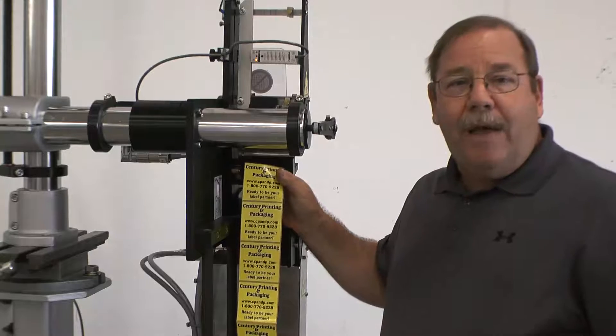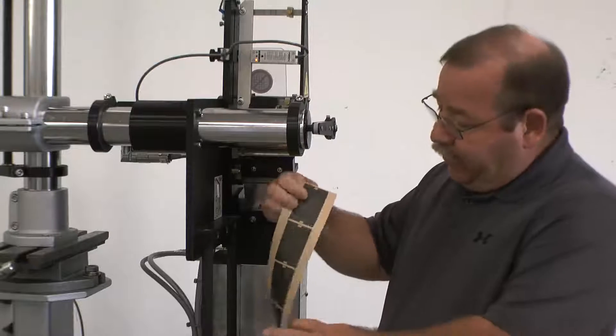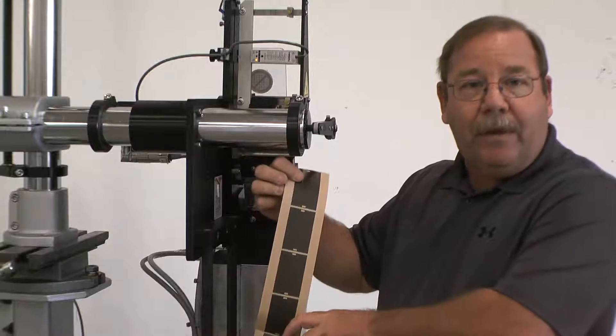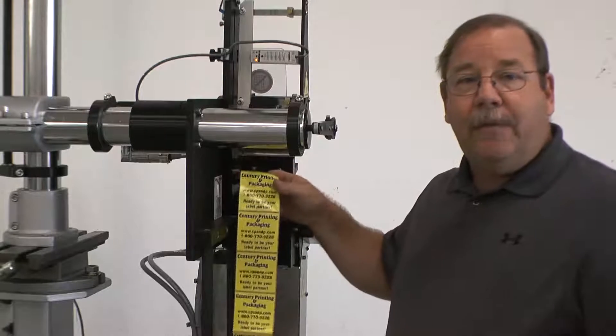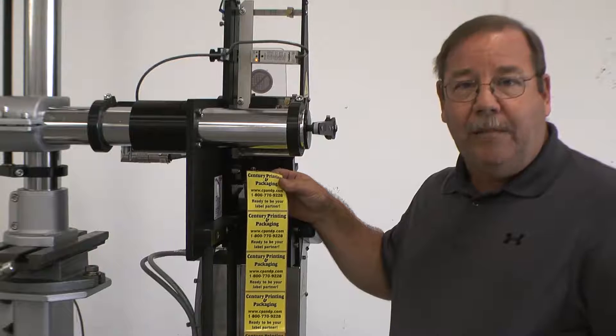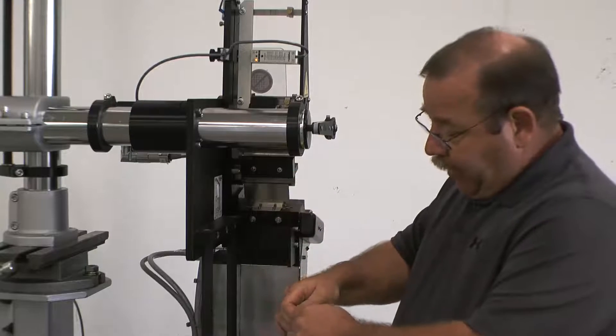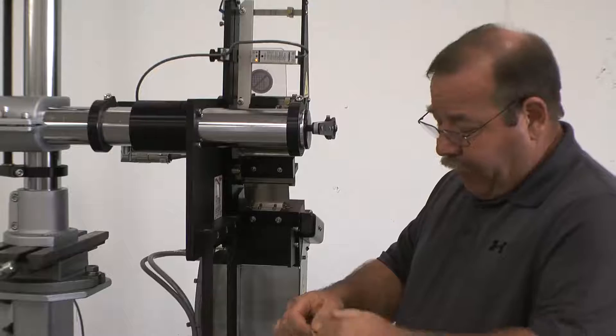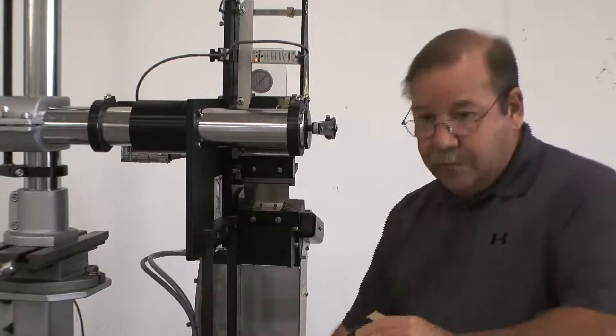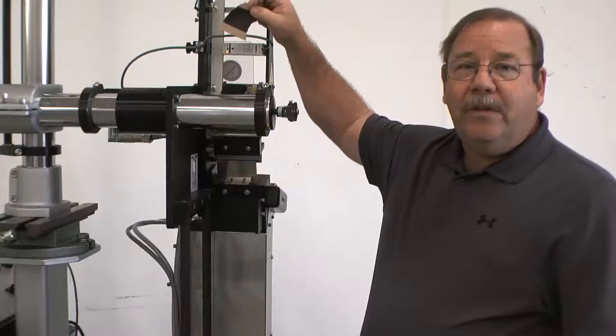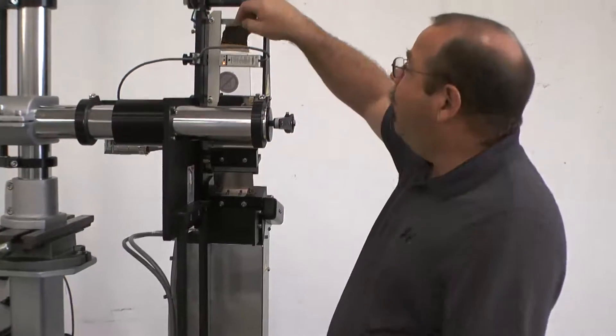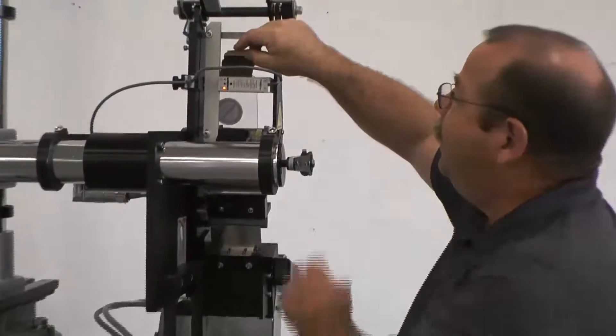This is material supplied by another vendor in which they print the witness bars on the backside of the liner. The process for training the label stop sensor is the same. We will tear a piece of material off without a label on it. So you take a small portion of the material.